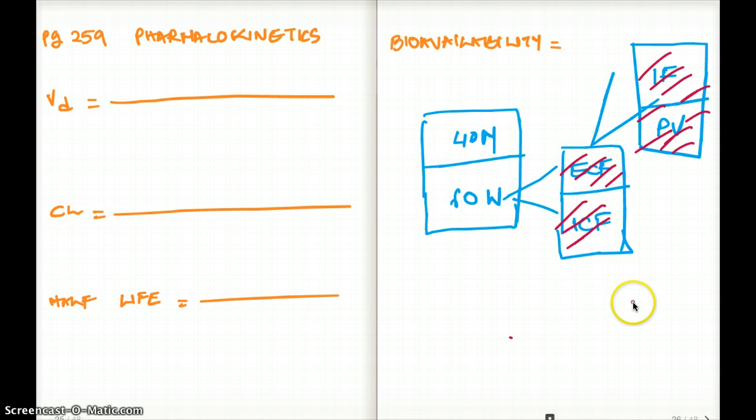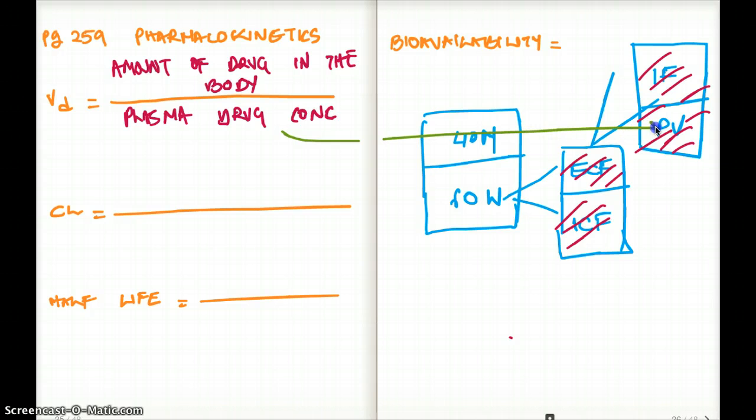How do we define volume distribution? The one that we have on the denominator is going to be plasma drug concentration. The one on the numerator is going to be amount of drug in the body. Whenever we talk about plasma drug concentration, it's got to be in the plasma. That means this corresponds to only this box, what drug is present in this box.